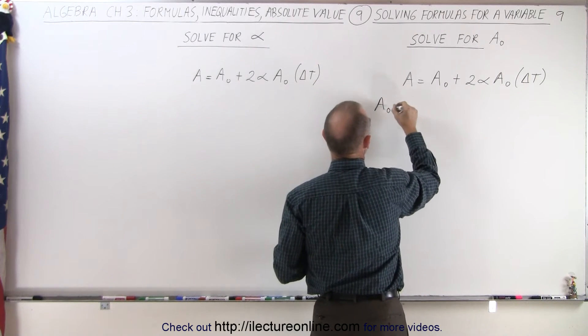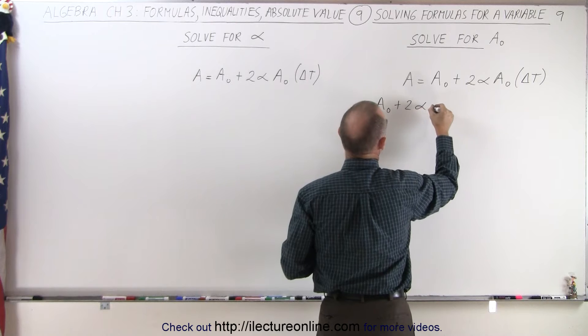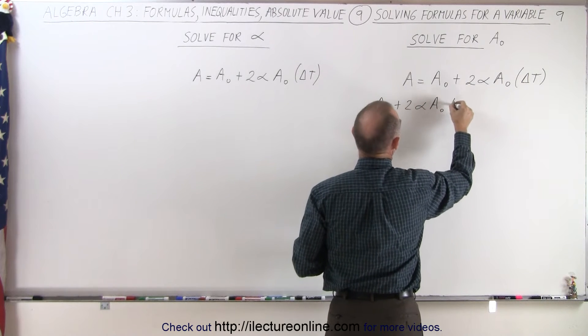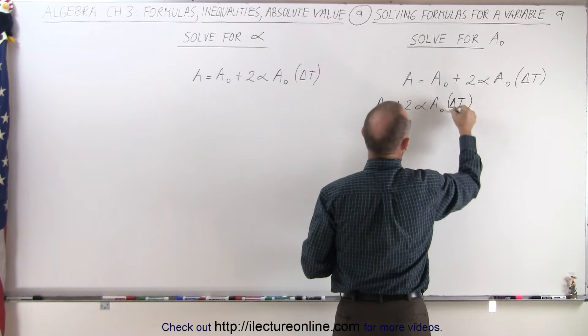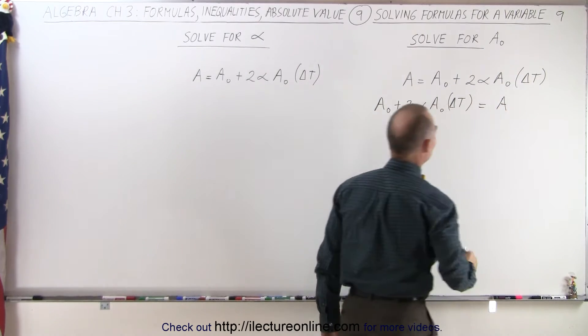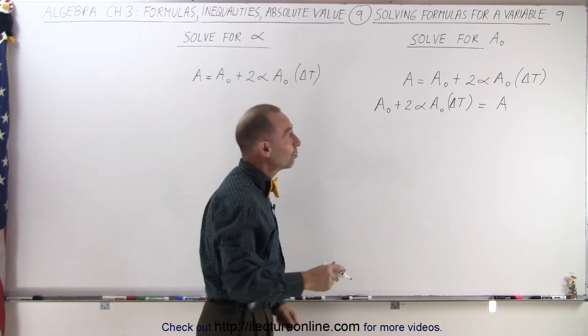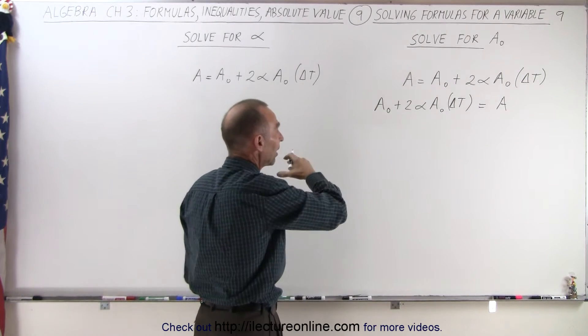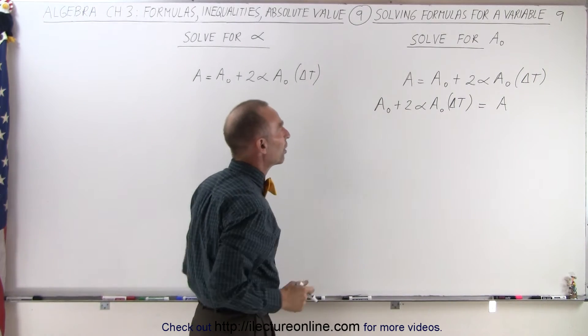So, on the left side, we now end up with A sub nought plus 2 alpha A sub nought times delta T, and I put it in round parentheses so it looks like it's together, equals A on the right side. So, at least I've accomplished moving all the terms with an A sub nought on the left side by simply flipping the equation over.